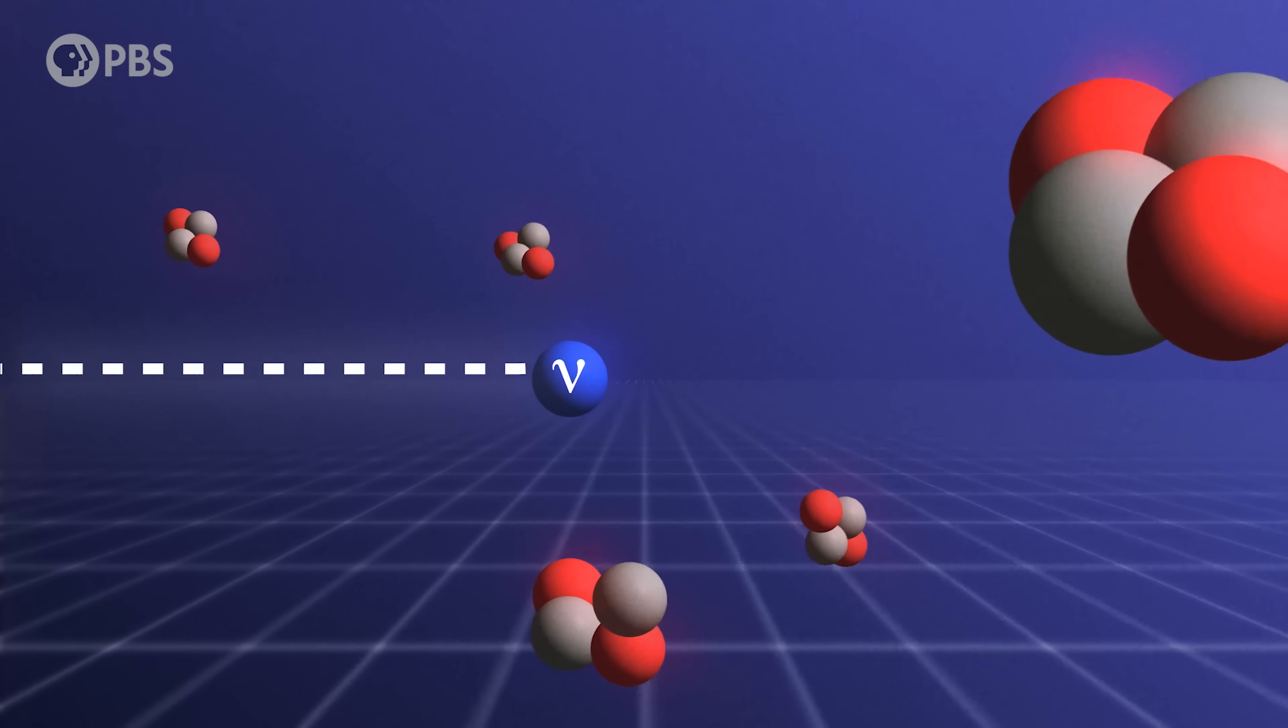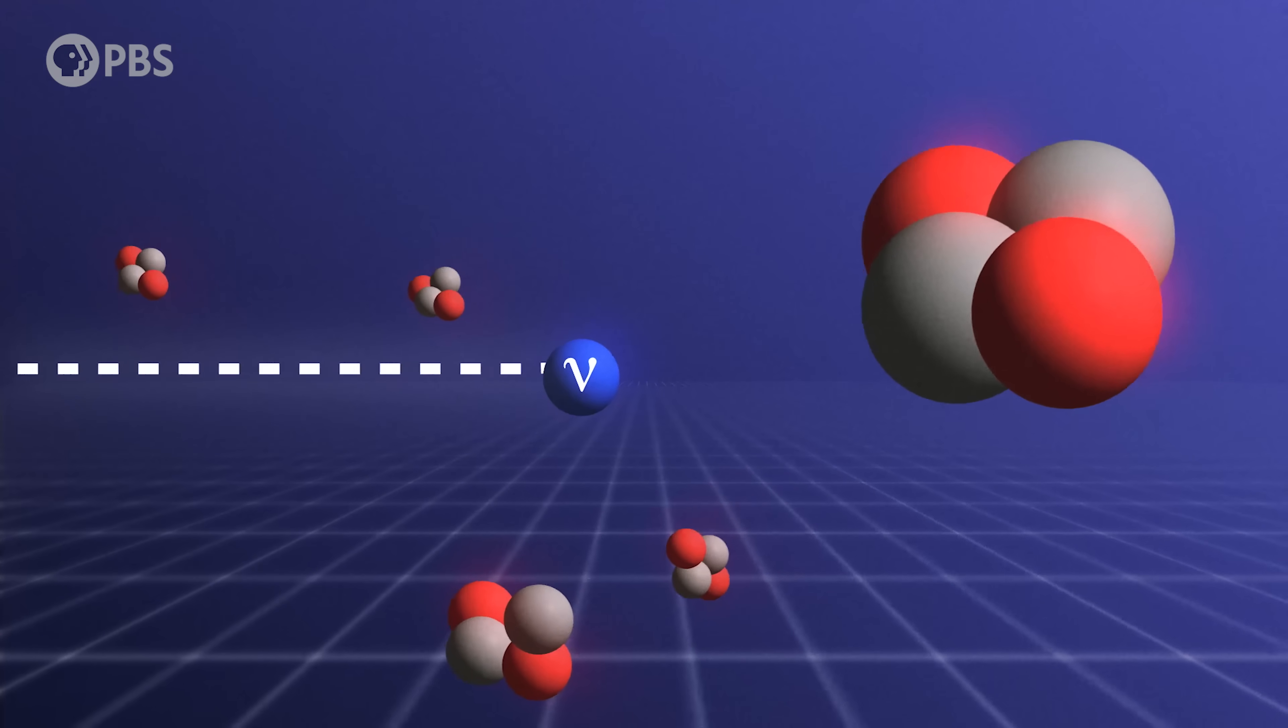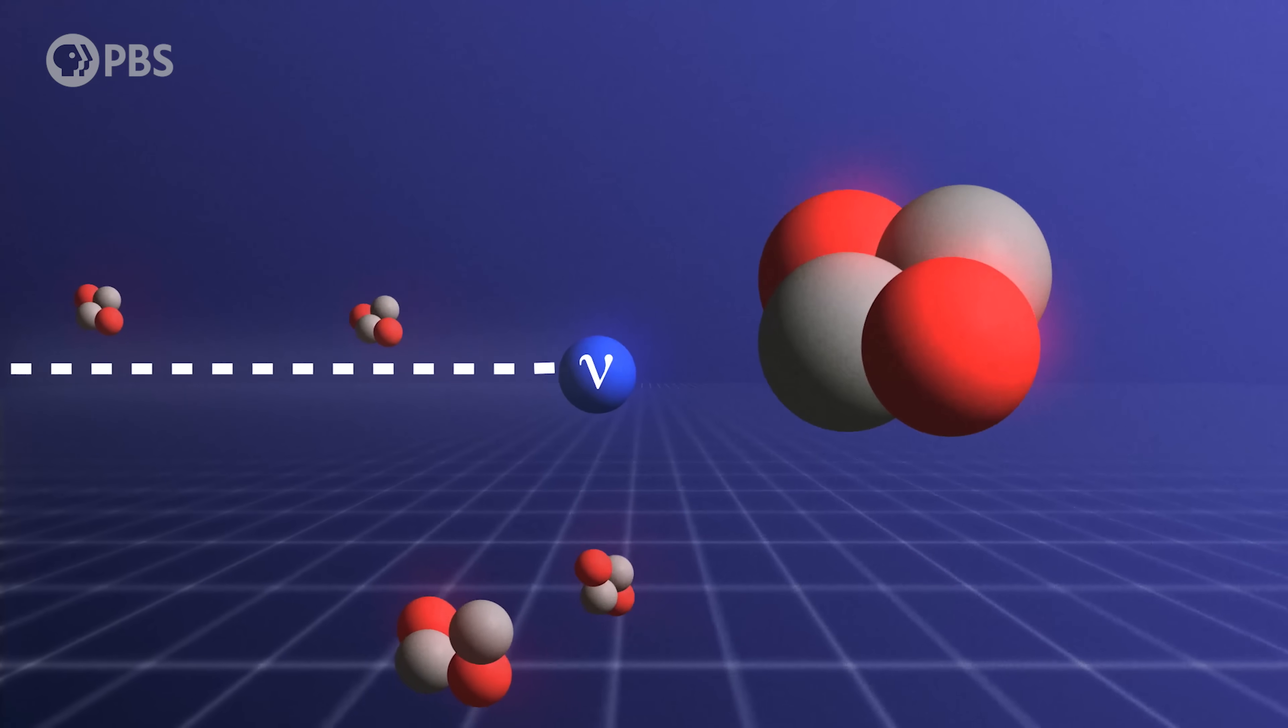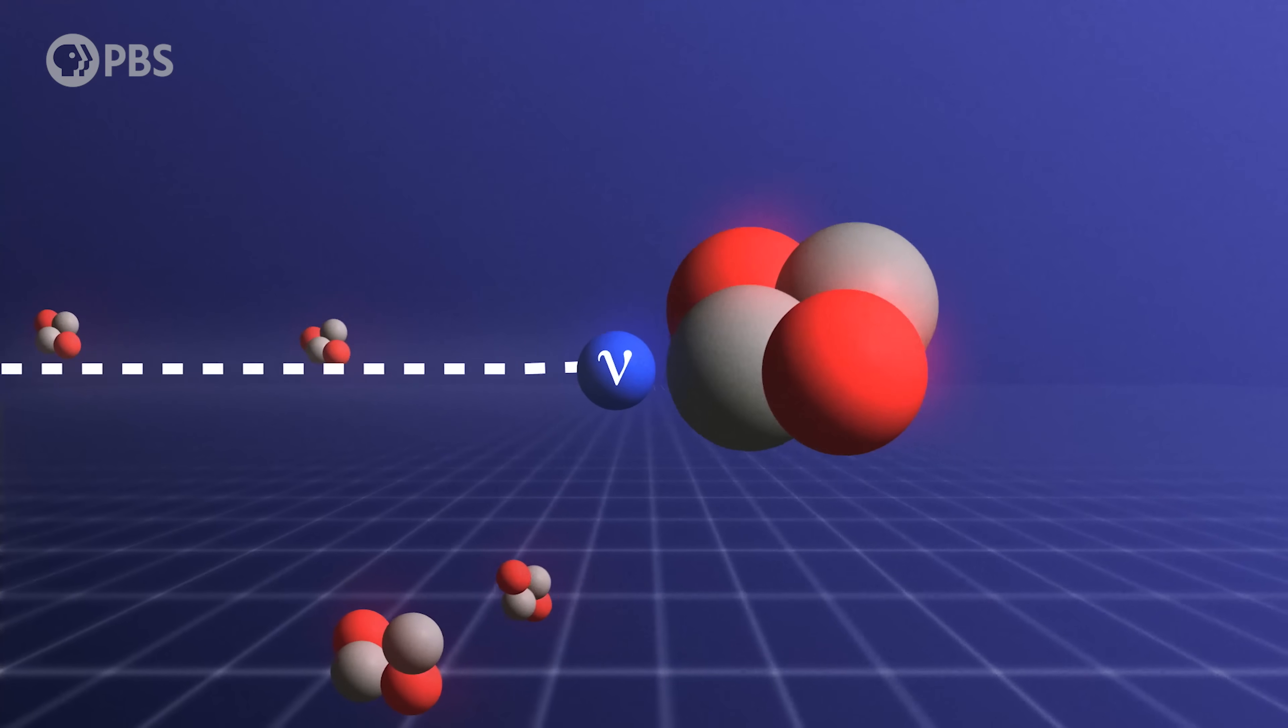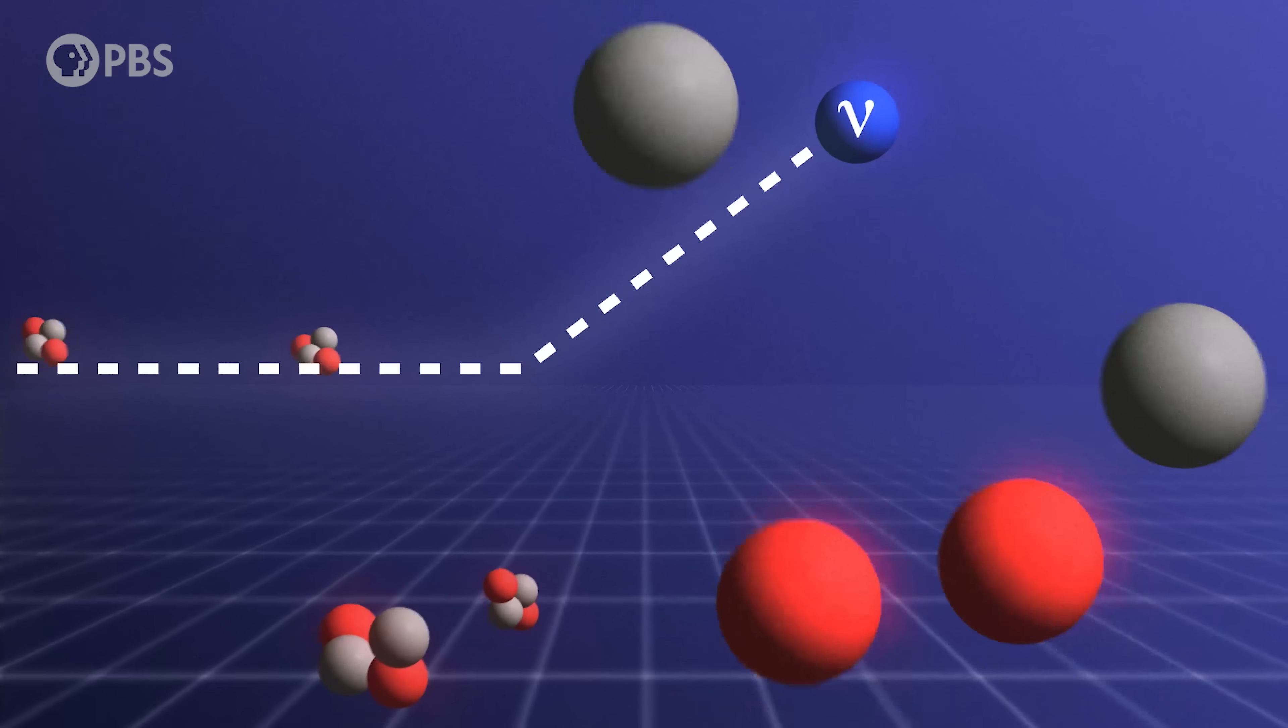In order for a neutrino to interact with an atomic nucleus, it needs to pass so close that it's essentially inside the nucleus. In other words, we need a direct hit.